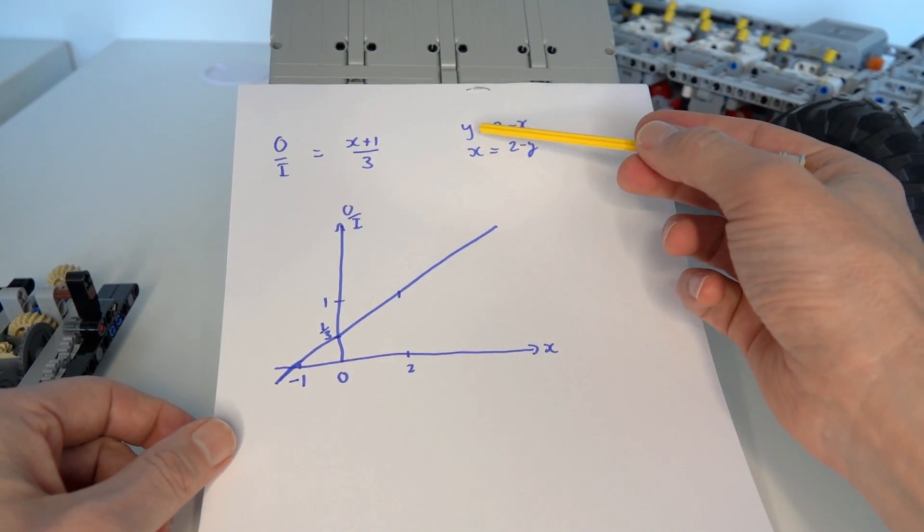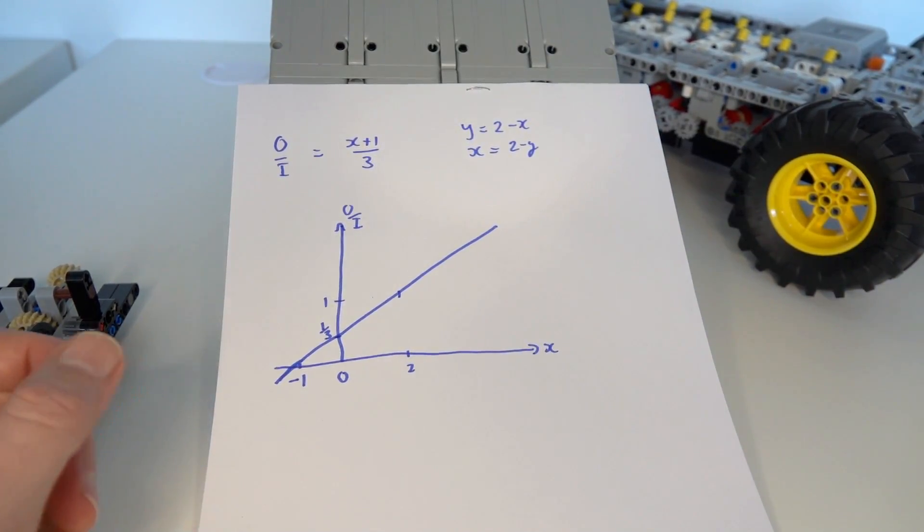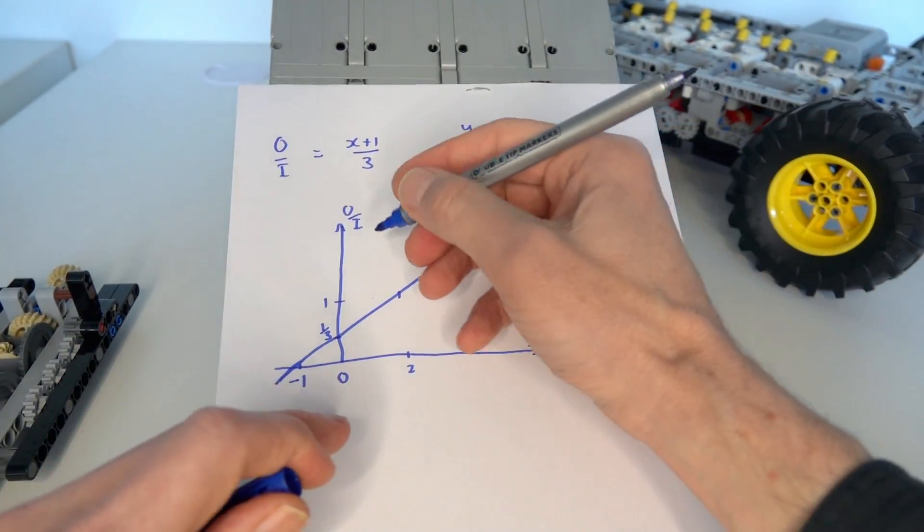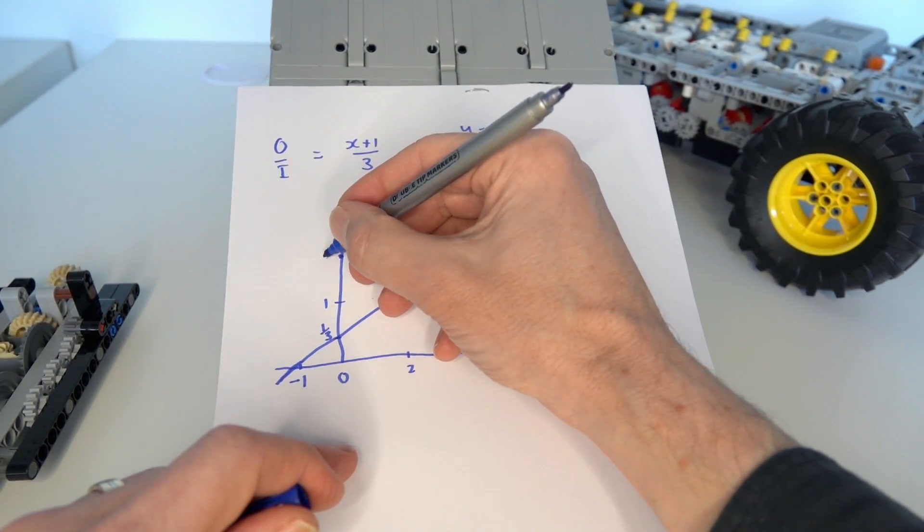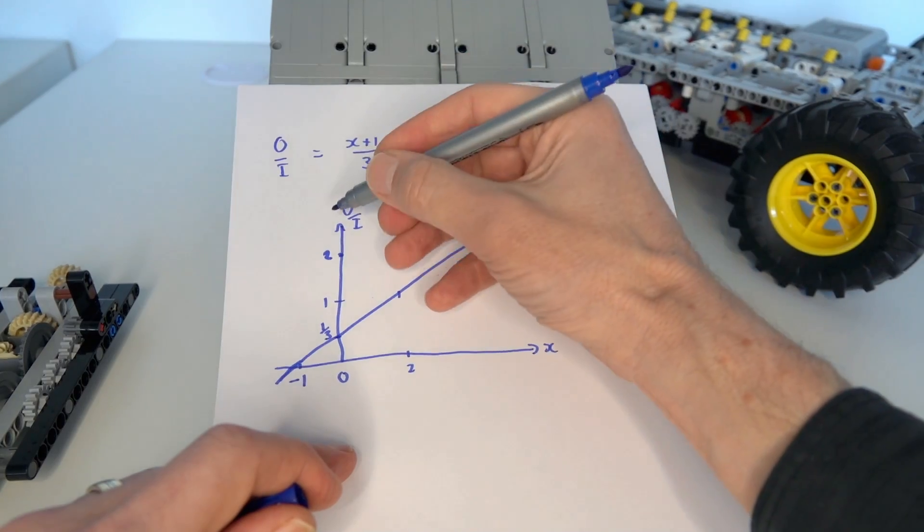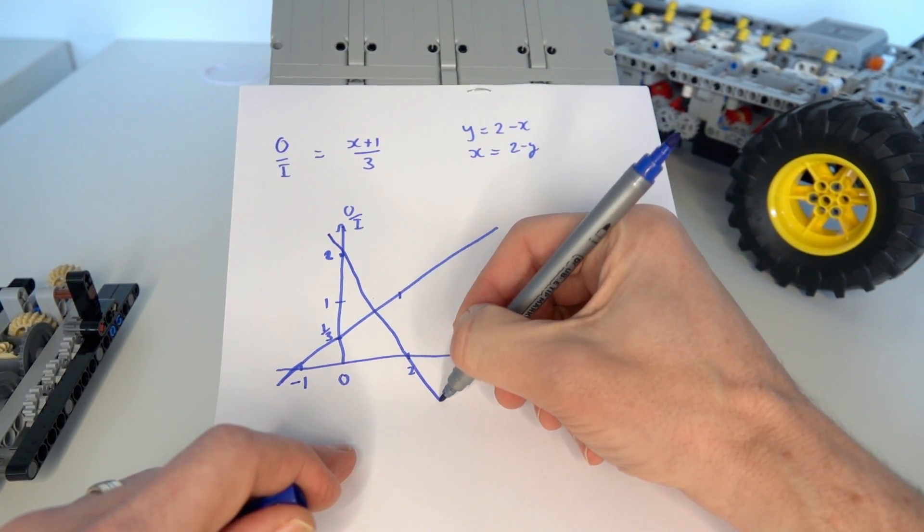So what we can do is also draw the relationship for y which is 2 minus x. So if we draw that on the diagram we have that for x equal to 0 we've got y is equal to 2 and we can draw the line roughly like this.